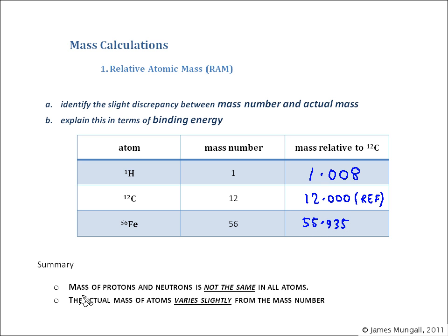Okay, to summarize: the mass of protons and neutrons is not the same in all atoms. That's why we need to have a reference, do our amounts relative to carbon. And the actual mass of atoms therefore varies slightly, but only slightly, from the mass number. It only causes a very small difference between mass number and relative mass.